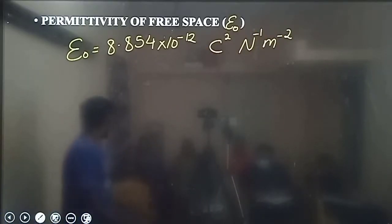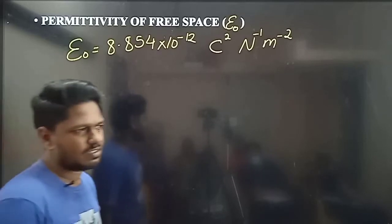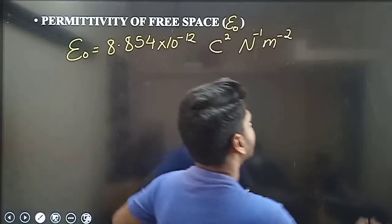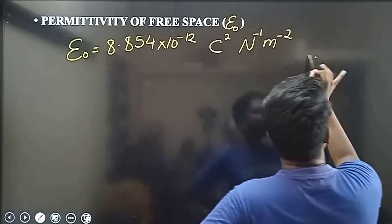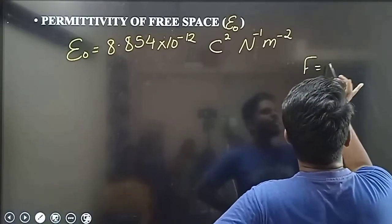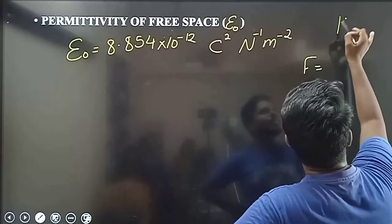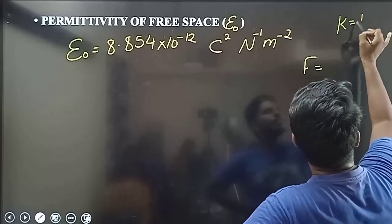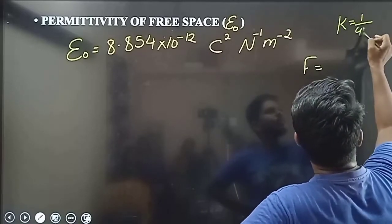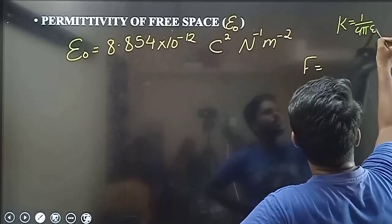How did the unit come here? That's homework. If you look at F equals K — or K equals 1 by 4 pi epsilon — you can derive it.